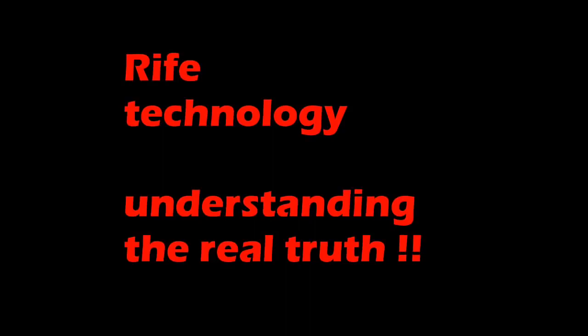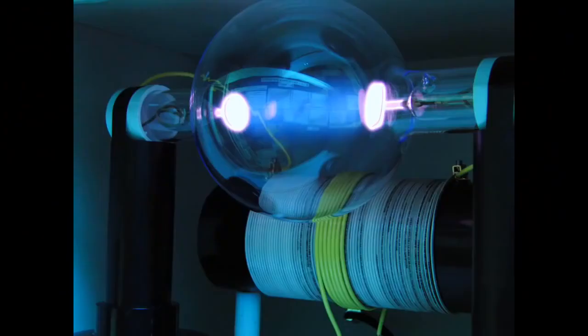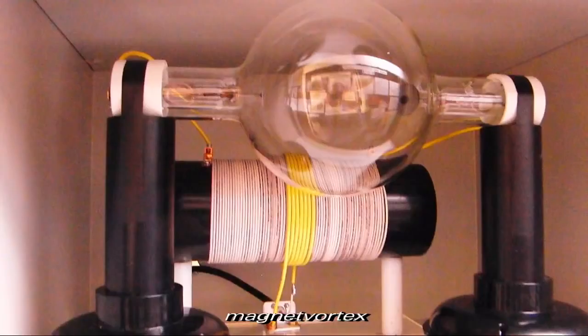This is Rife Technology, understanding the real truth. Here is an example of a helium plasma tube, known as a Phanotron tube, that was discovered and developed in the 1920s and 1930s by Raymond Royal Rife, and this is my attempt to replicate this method.